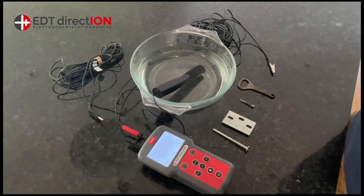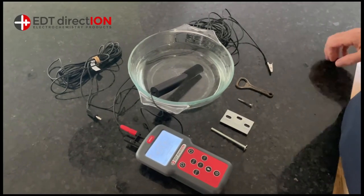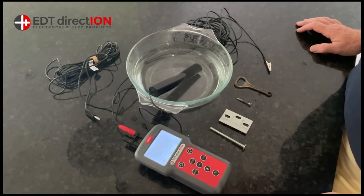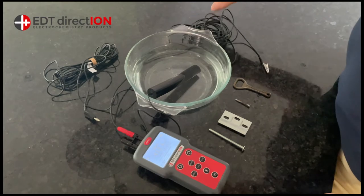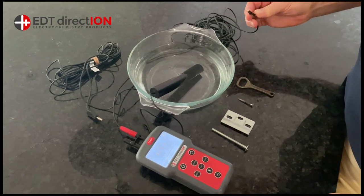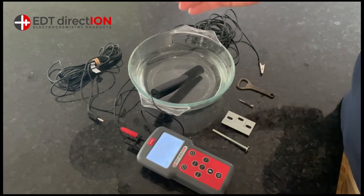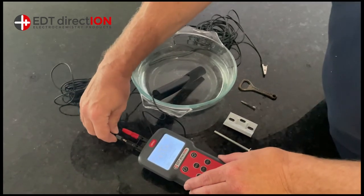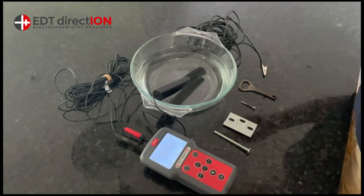Here we have all the components needed to test the hull potential of your boat: a millivolt meter, a five meter cable to connect to any part of your hull, and a reference electrode. This is a silver silver chloride reference electrode connected to the negative terminal.